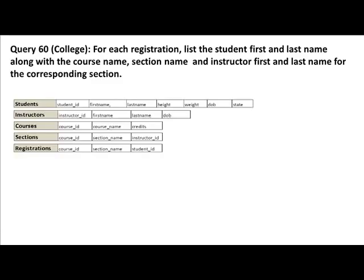Now to get the instructor first name and last name for the corresponding section of the registration, there's no direct linkage between registrations and instructor. Instead, from a registration, given the course ID and section name, you can find the section. From the section, you can get the instructor ID, then get the instructor name. So what this requires is for us to join the registration table also to the section table, even though we are not displaying any information from the sections table.